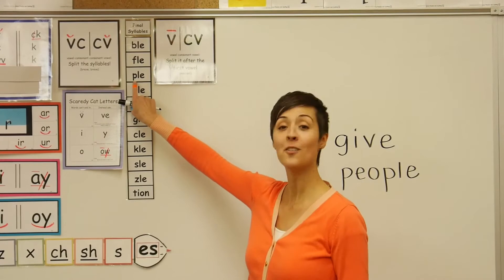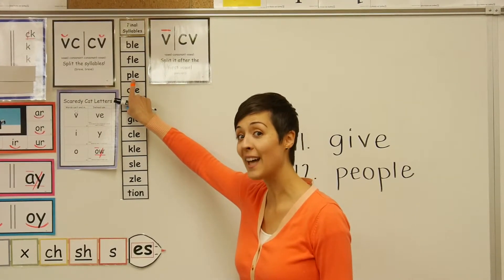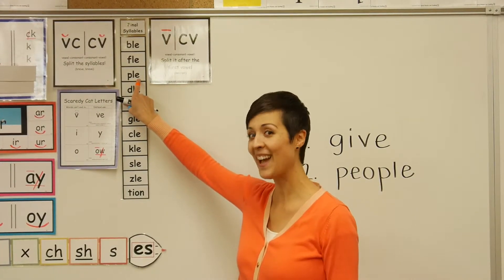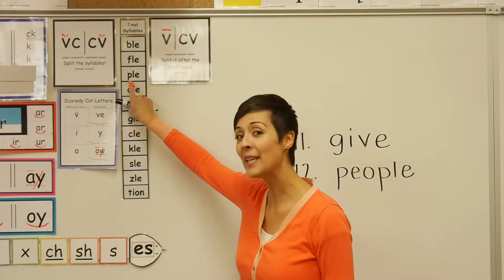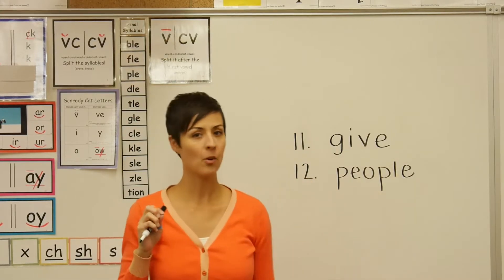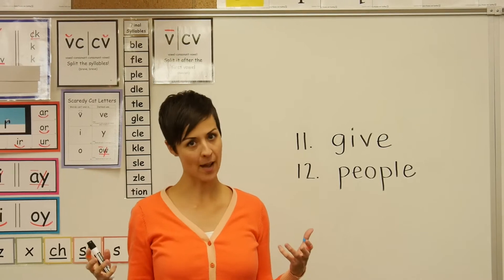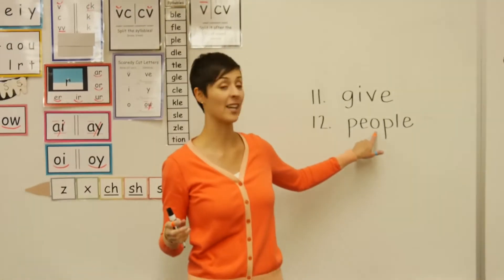Final syllable P-L-E. Over here on our chart. Final syllable P-L-E. Do it with me. Final syllable P-L-E. So because of that the only really tricky letter that you have to remember is the letter O.